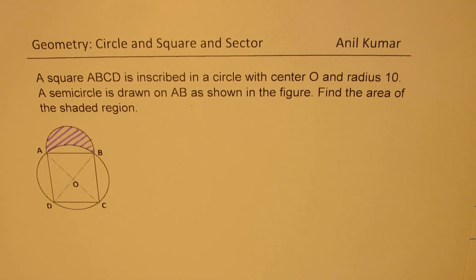The question here is: a square ABCD is inscribed in a circle with center O and radius 10. A semicircle is drawn on AB as shown in the figure.